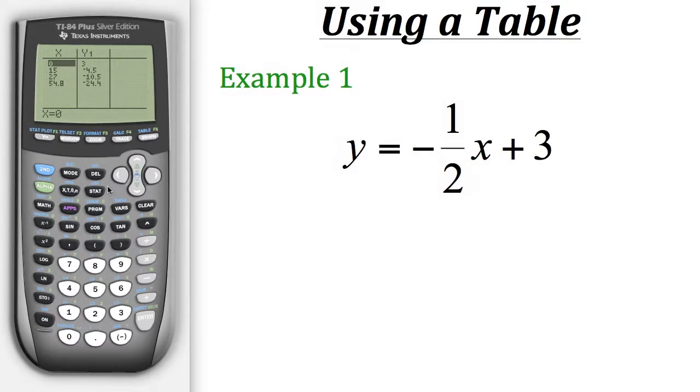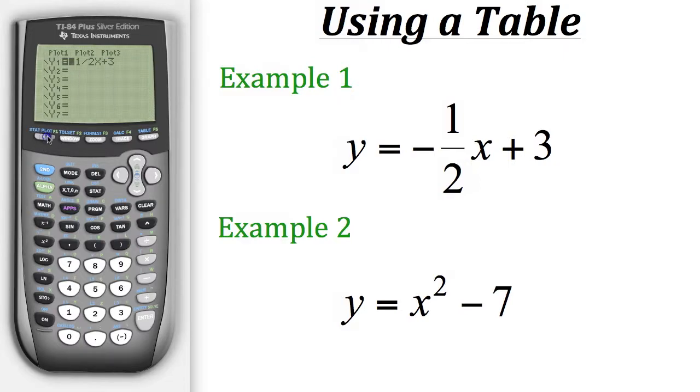Now, what if you want to look at another equation at the same time? Well, we could do that on the calculator by putting in another equation into the y equals. So let's take a look at another equation. So here we have y equals x squared minus 7. Well, if we want to look at its table along with our first equation, we just need to go put it into another slot in our y equals. So for example, we could go down to y2 and put in y equals x squared minus 7.